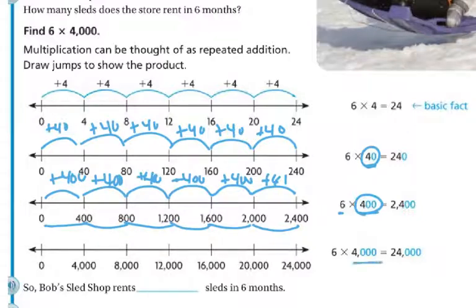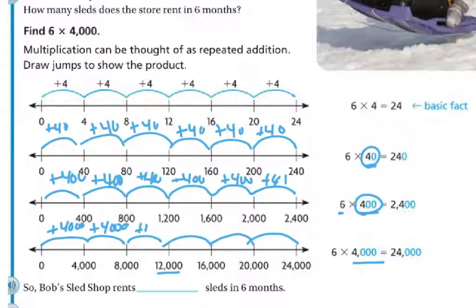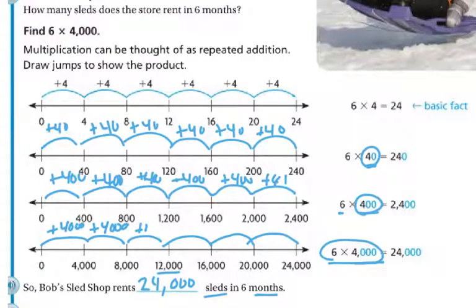And this next one, I'm going to jump by 4,000s. So every time I jump, I'm jumping by 4,000. Then when I jump again I get 8,000, then 12,000, then 16,000, then 20,000, then 24,000. So 6 times 4,000 is 24,000 — 24,000 sleds in 6 months is the answer to the question.